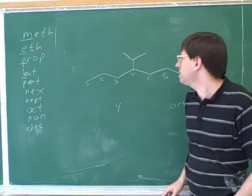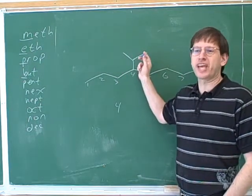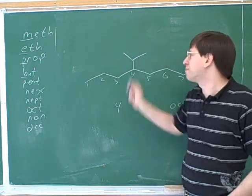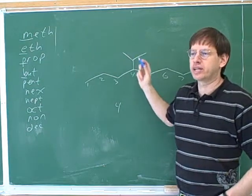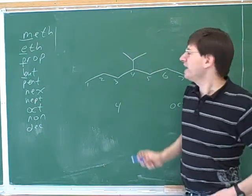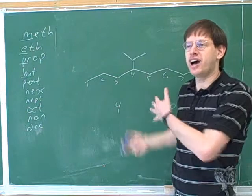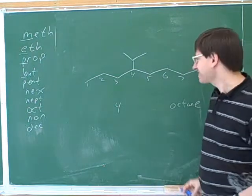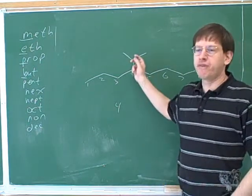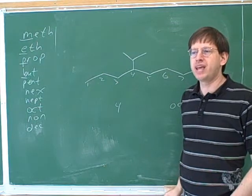But now we have a difficulty, which is that the substituent is complicated. This is what we could call a branched substituent, or a complex substituent. It's like the substituent has a substituent on it, all right? So we don't really have a straightforward way of naming this.